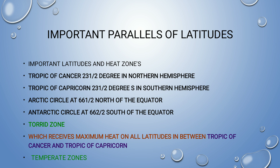Some important parallels of latitudes and heat zones: the Tropic of Cancer is at 23.5 degrees in the northern hemisphere. The Tropic of Capricorn is at 23.5 degrees in the southern hemisphere. These are important lines to remember.